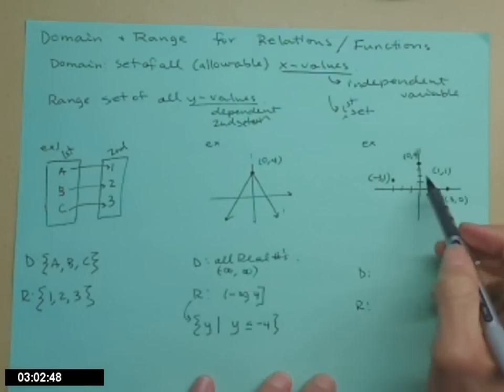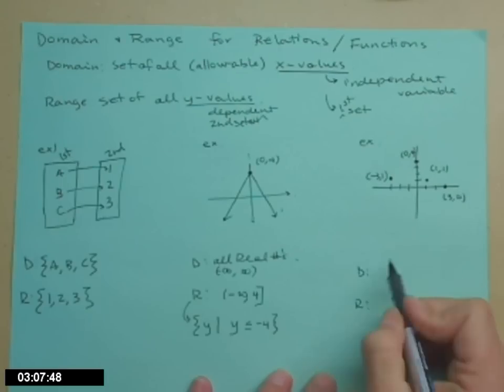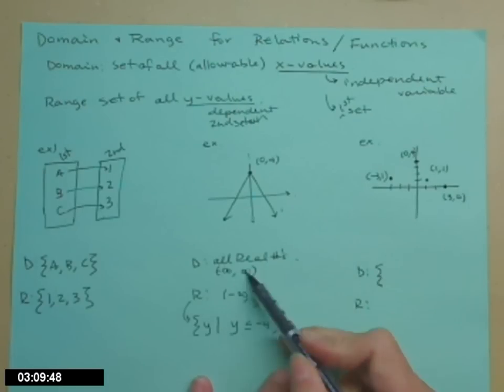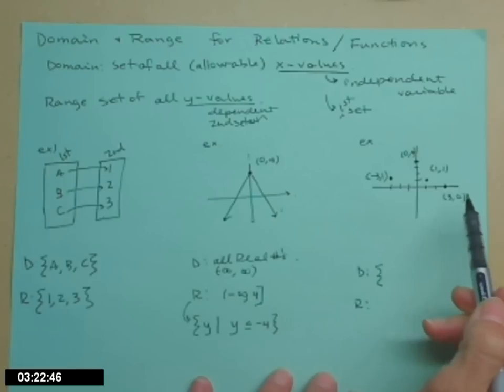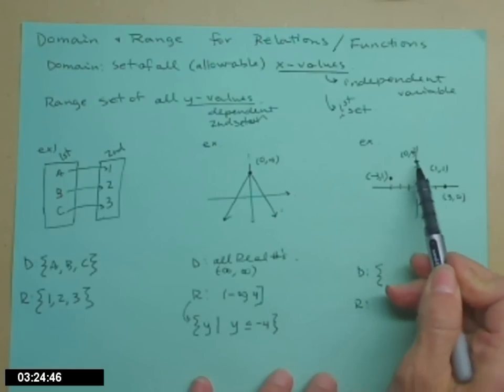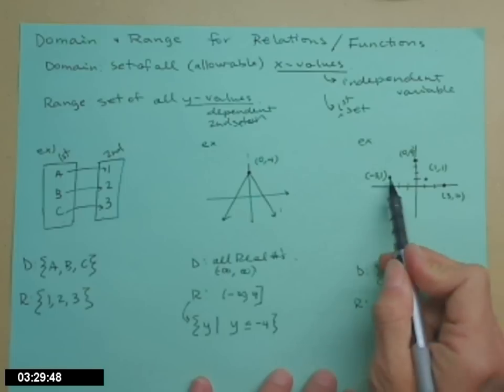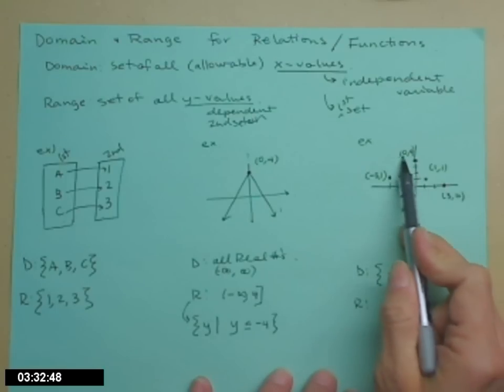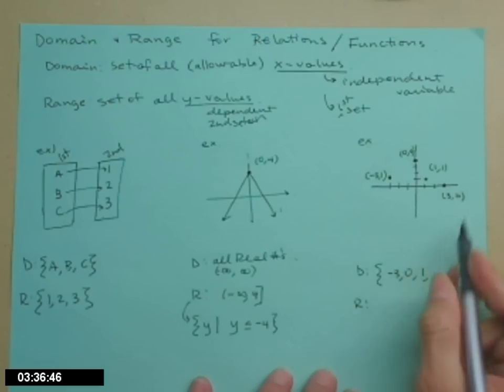For my last example, I have a graph again, but this time I have some discrete points listed. So I can't use interval notation because that implies that it's all the numbers between negative infinity and 4, all those fractions, all those decimals, everything that happens between negative infinity and 4. On this example, I just mean these four specific points and their x and y values. So the domain is negative 3. Here's another x value of 0, an x value of 1, and an x value of 3.